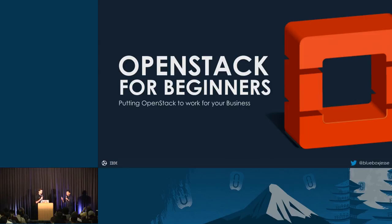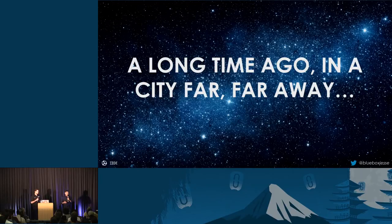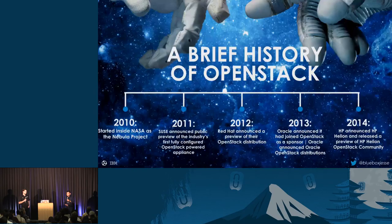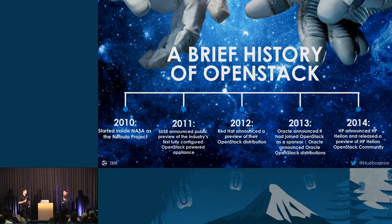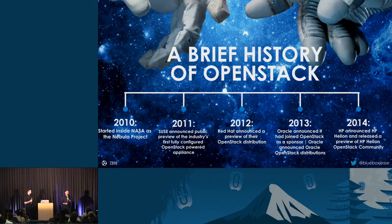Thank you all for coming. Let's start with the history of OpenStack and where it originated. A long time ago in Austin, to be precise, OpenStack was created and launched by a joint project through NASA and Rackspace. In 2010 the project was created, and in the beginning OpenStack had object storage and compute services. By 2012 the need for a foundation was created, and we made it into an open foundation — the OpenStack Foundation as we know it today.